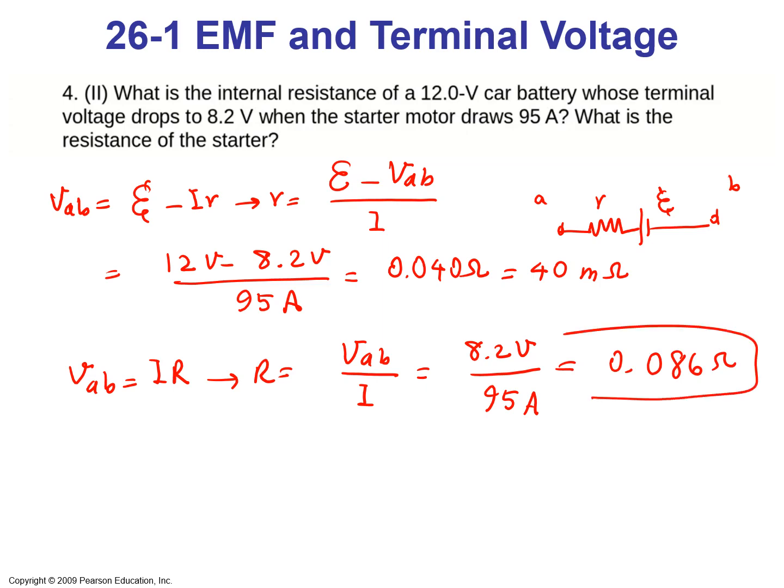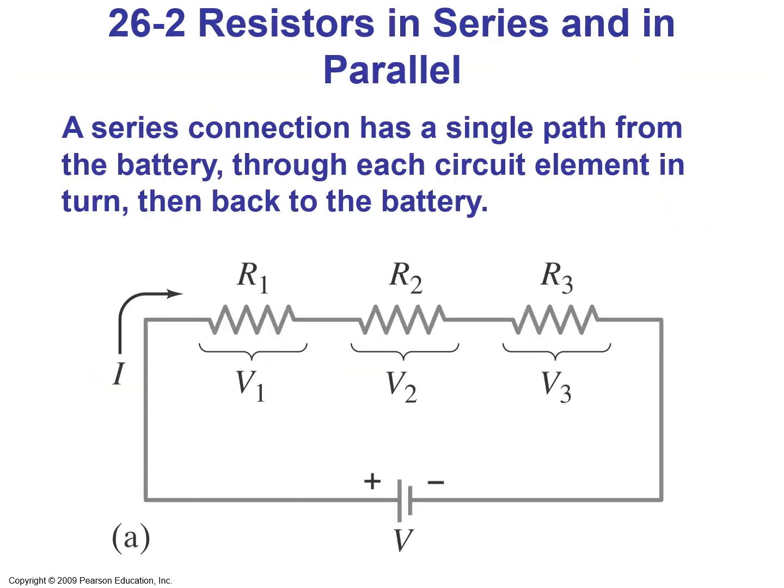Section 2: Resistors in series and in parallel. A series connection has a single path from the battery through each circuit element in turn, then back to the battery. Here we can see three resistors R1, R2, and R3 connected in series to the battery, and each of them has a voltage drop of V1, V2, and V3 respectively.